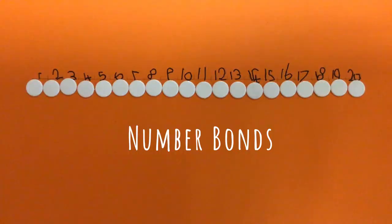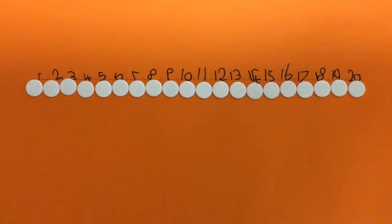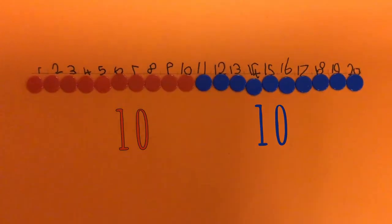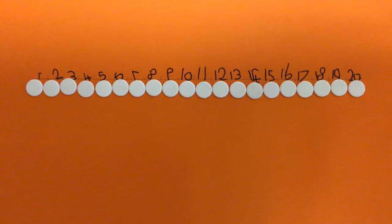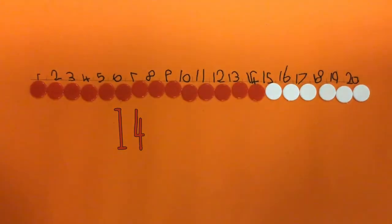Number bonds of 20 with counters. 10 and 10. 5 and 15. 14 and 6.